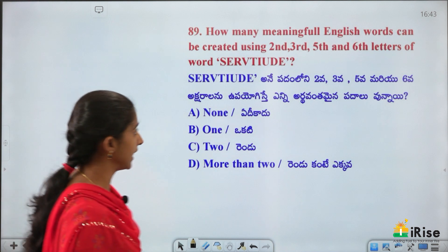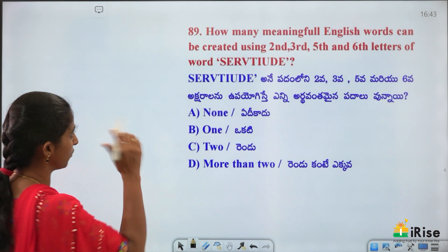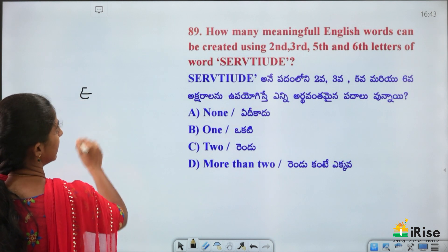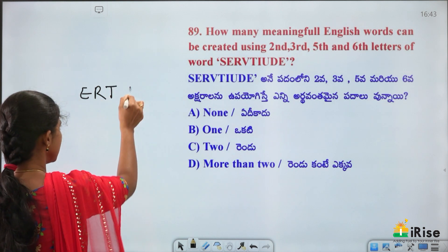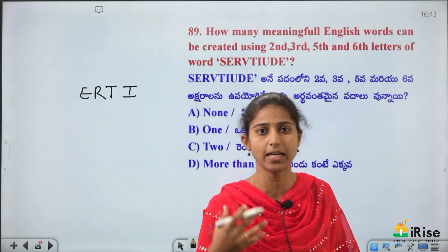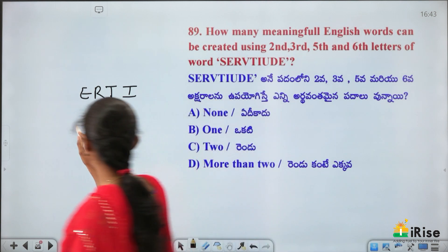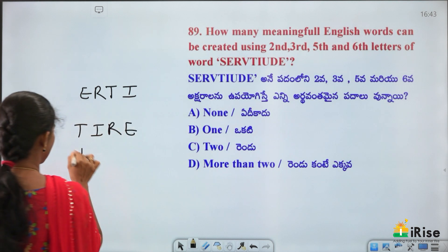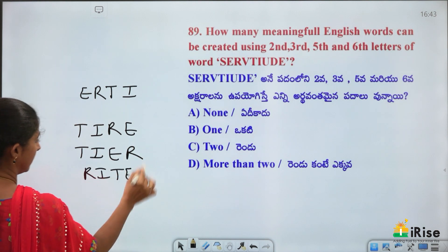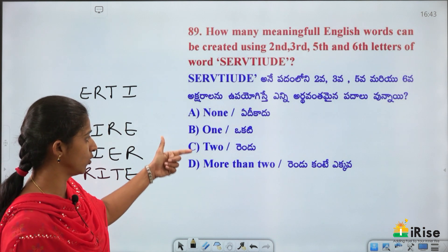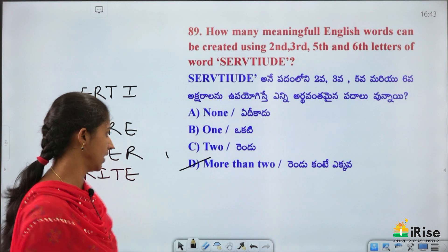How many meaningful English words can be formed using the 2nd, 3rd, 5th and 6th letters of the word SERVITUDE? Letters are: E (2nd), R (3rd), T (5th), I (6th). Words: TIRE, TIER, RITE — at least 3 words. Based on options, the answer is more than 2 — option D.